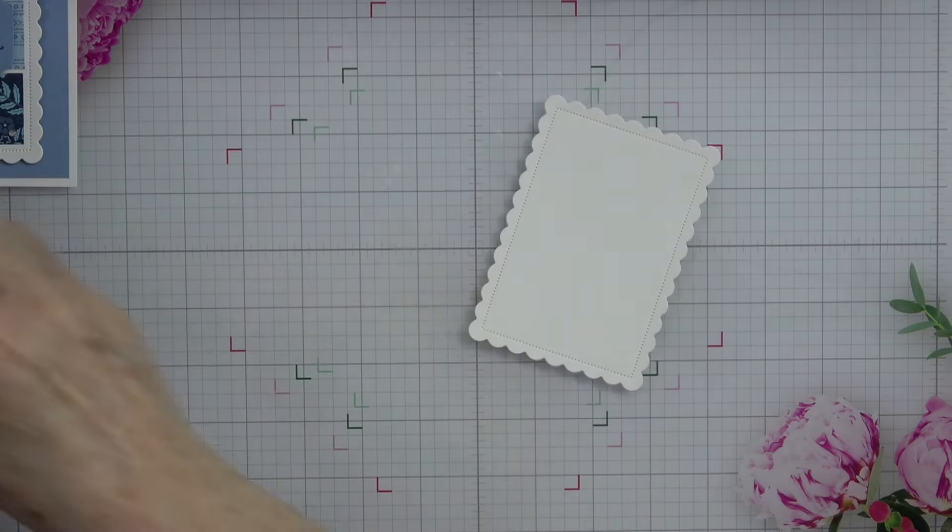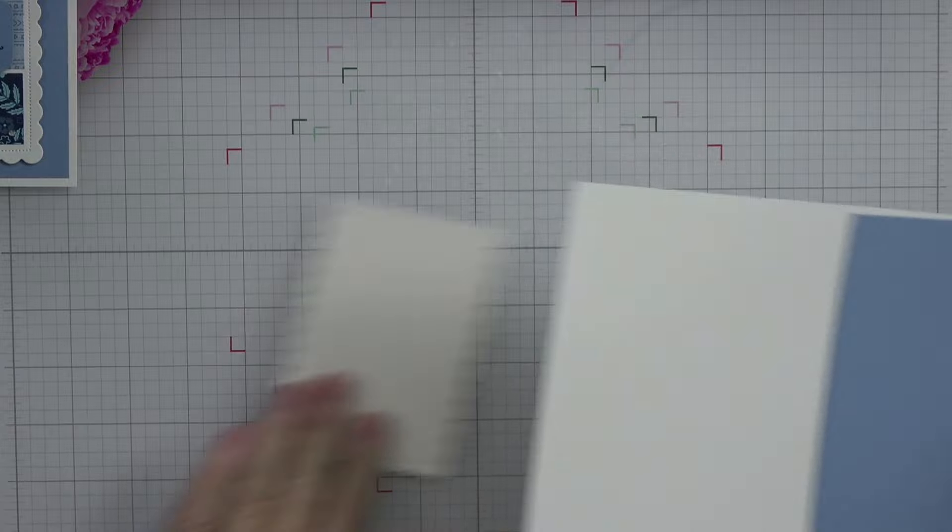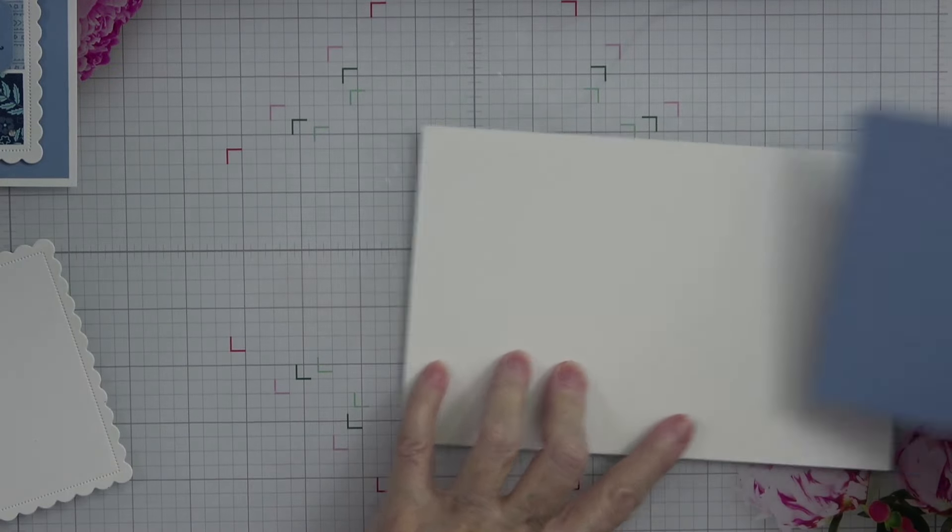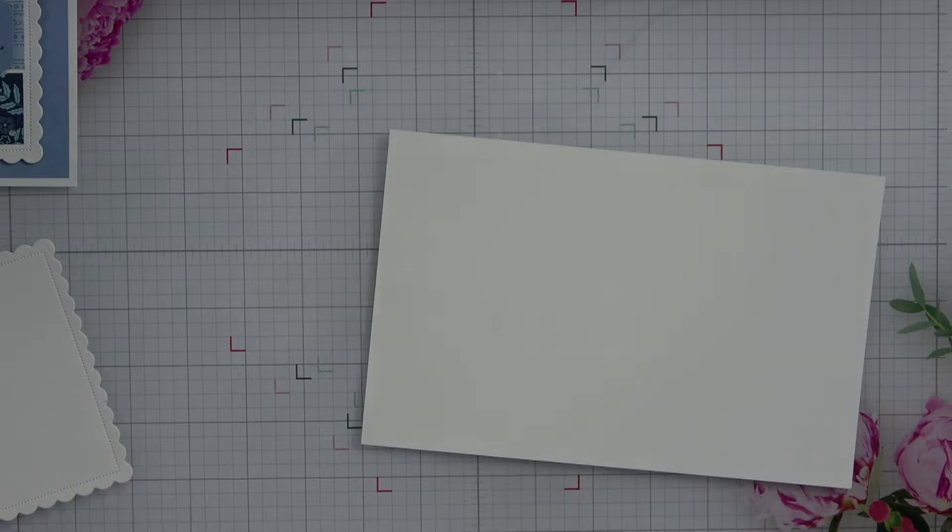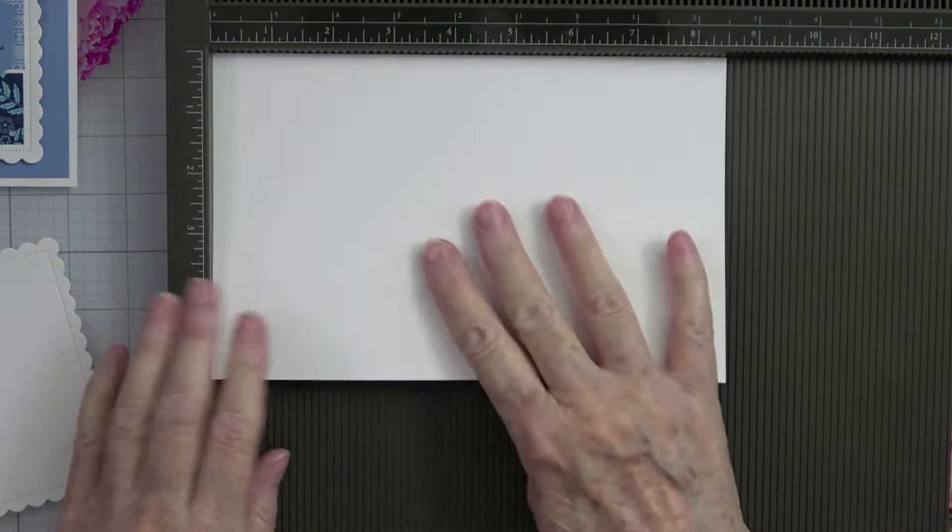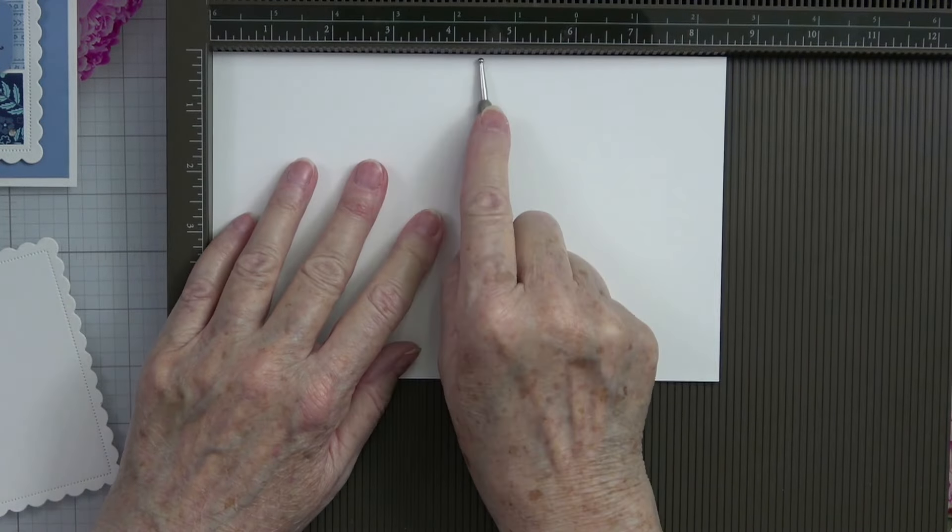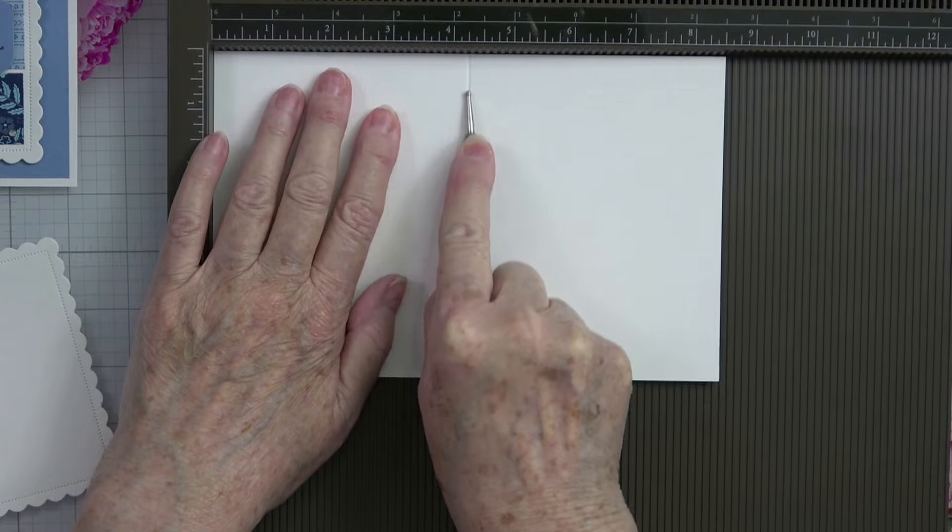All right, so now let's bring our card over and the first thing I want to do is go ahead and give this a score at four and a quarter. So I'm going to bring up my scoreboard and I'm going to lay this up in my top left corner on the eight and a half inch side and I'm going to score it at four and one quarter.